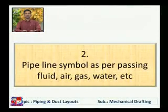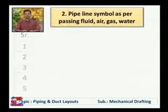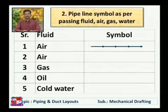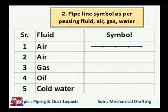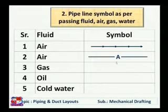We will now discuss about pipeline symbols as per passing fluid — air, gas, water, etc. — which symbols are used in the pipeline to show which type of fluid is flowing inside that pipe. Suppose the fluid is air; its symbol is drawn as a line having arrows in between, and the arrow shows the direction of flow of air. A second symbol used for air is writing 'A' in between the line, which means air is flowing inside that pipeline.